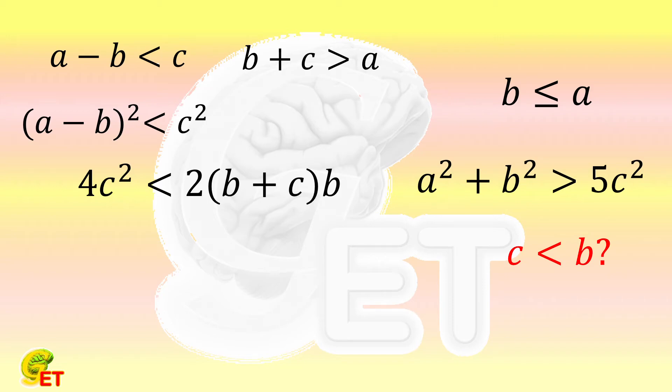We can deal with it by using proof by contradiction. Because the target to be proved is that c is smaller than b. So we assume that c is not smaller than b.